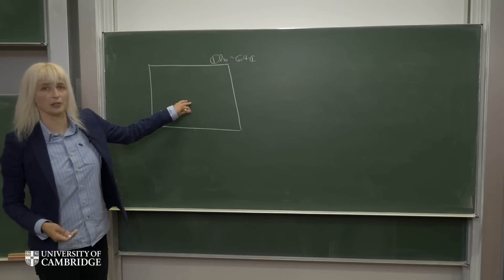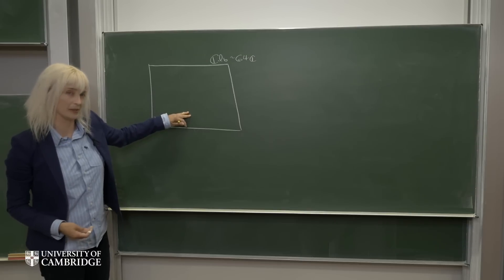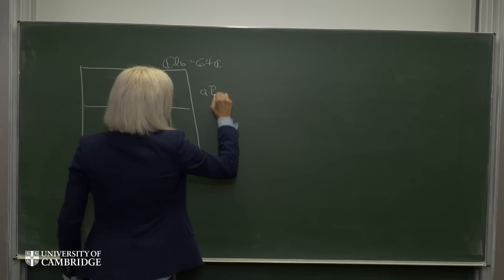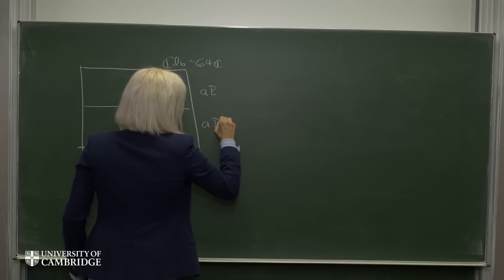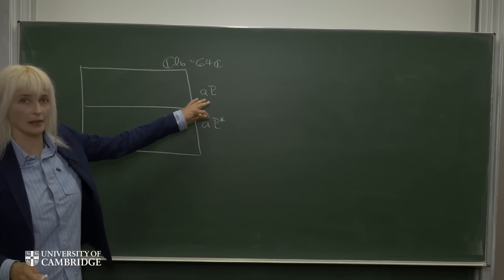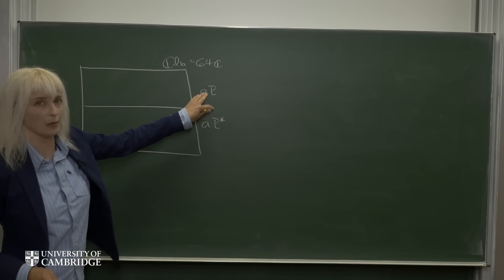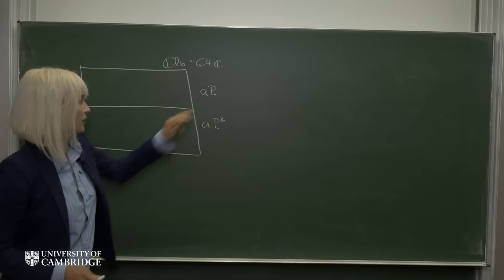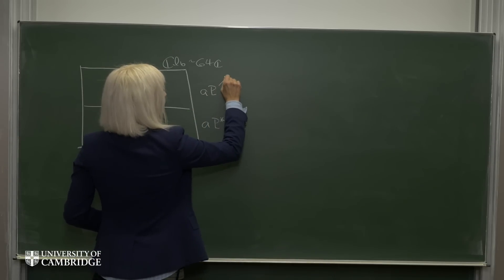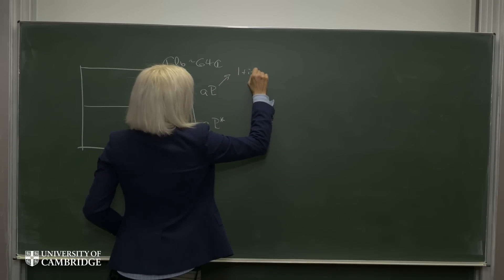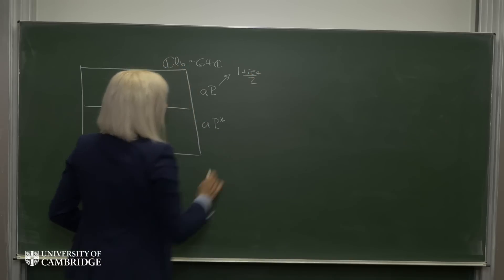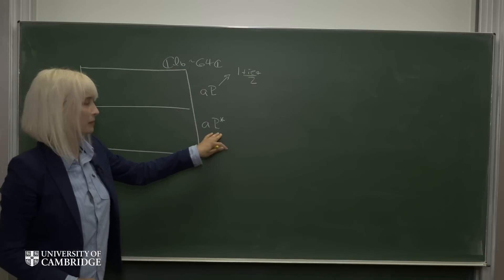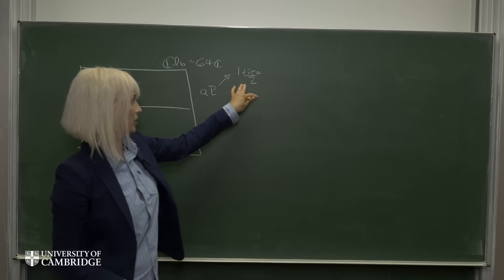So the first thing we're going to do is we're going to split this space into two pieces. So the pieces are going to be things of the form A, where this is any element out of this algebra, multiplied onto a projector P, where this P is defined to be 1 plus i e7 over 2, and the bottom space is just going to be any element multiplied onto P star, the complex conjugate of this.